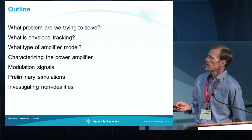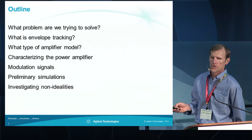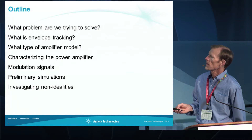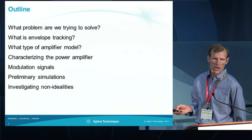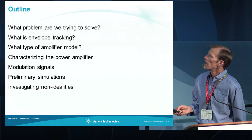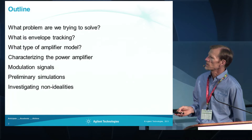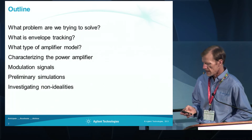I'll first talk about what problem we're trying to solve via envelope tracking, and then I'll talk about a basic block diagram for simulating envelope tracking. I'll discuss the types of amplifier models that we can handle and characterizing the power amplifier, and I'll discuss modulation signals a little bit, then show some preliminary simulations and talk about investigating some non-idealities.